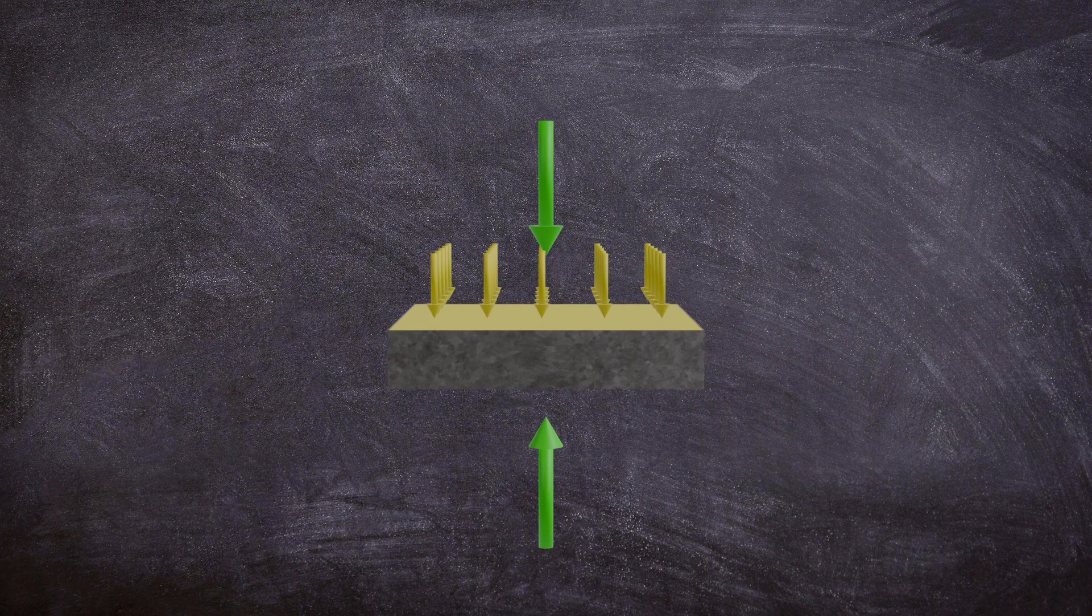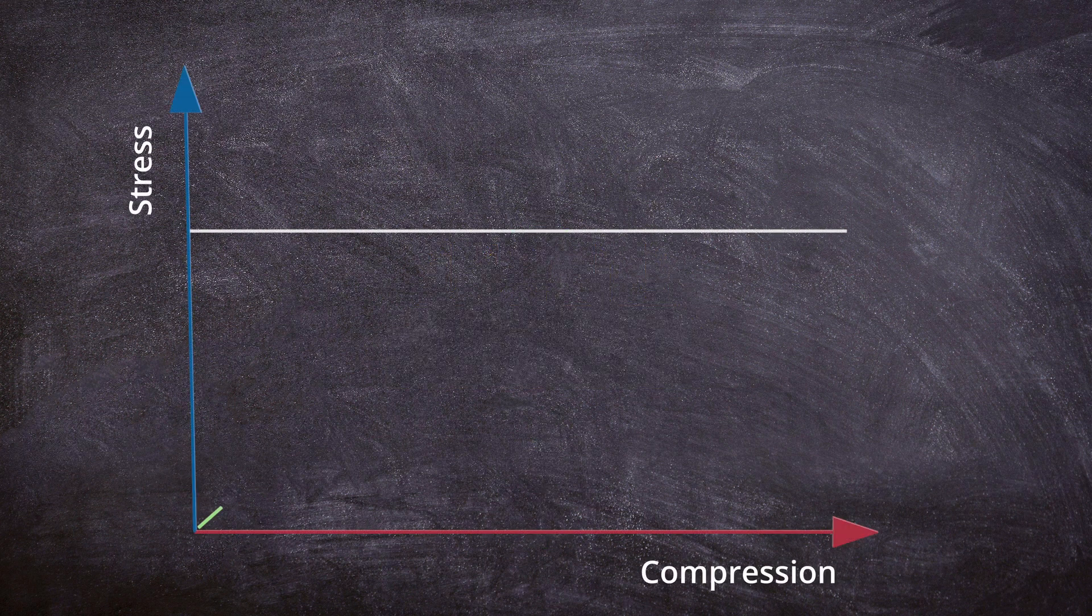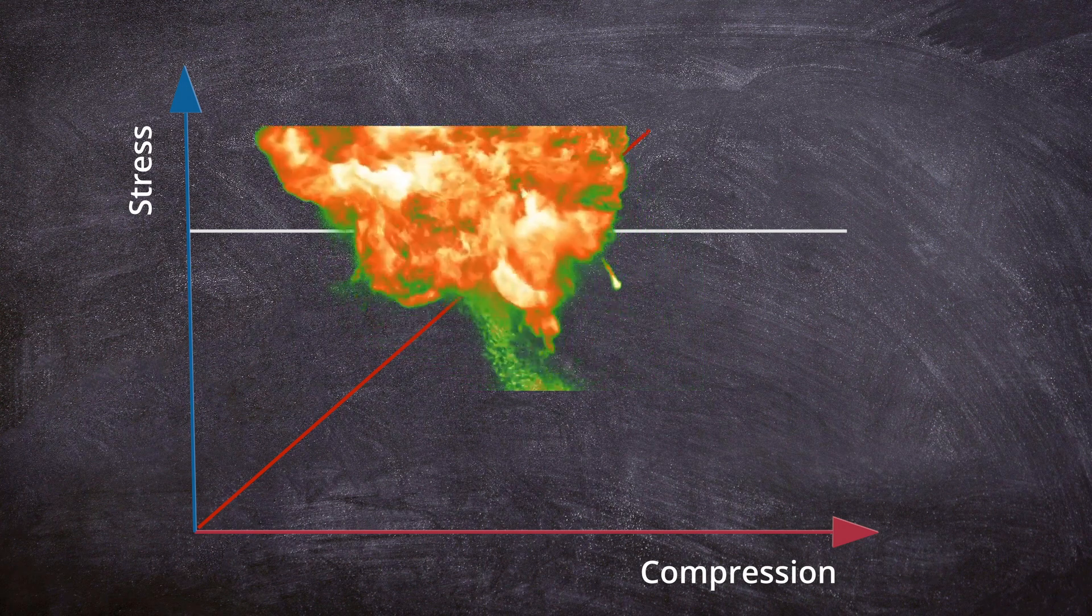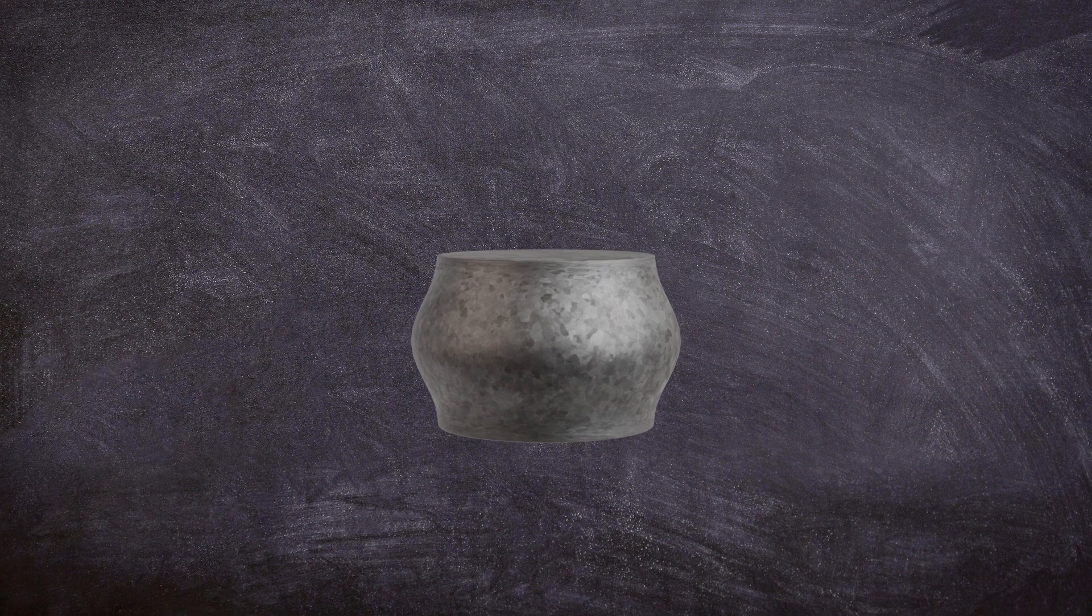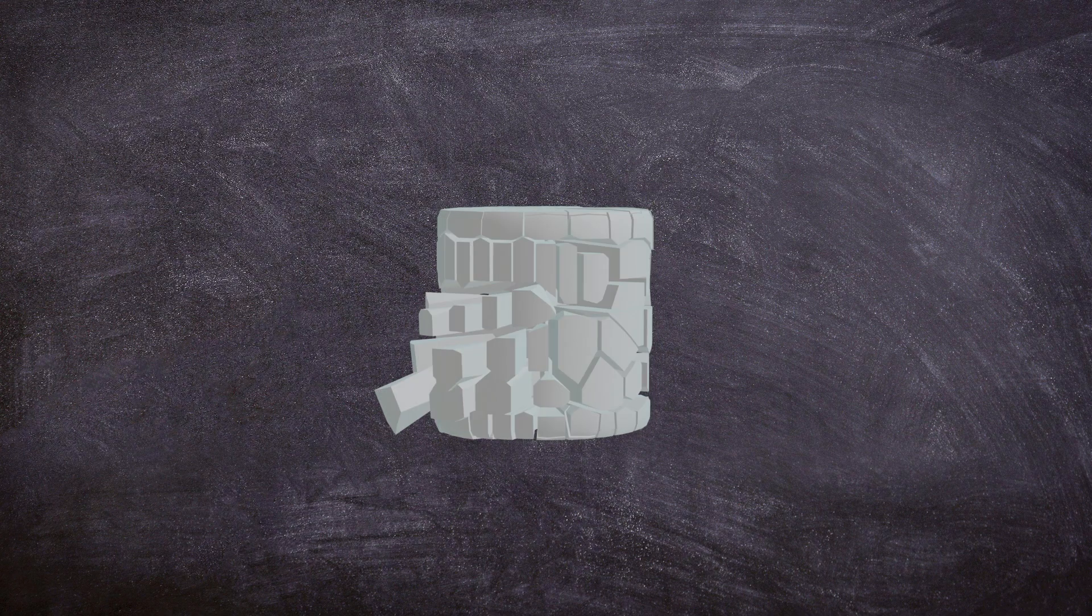Compression typically shortens and bulges the material, depending on its shape and material properties. In engineering, compression failure occurs when the applied stress exceeds the material's compressive strength, the maximum stress it can withstand before deforming or fracturing. Ductile materials under compression tend to deform plastically, often bulging or spreading without immediate failure, while brittle materials may crack or shatter abruptly.